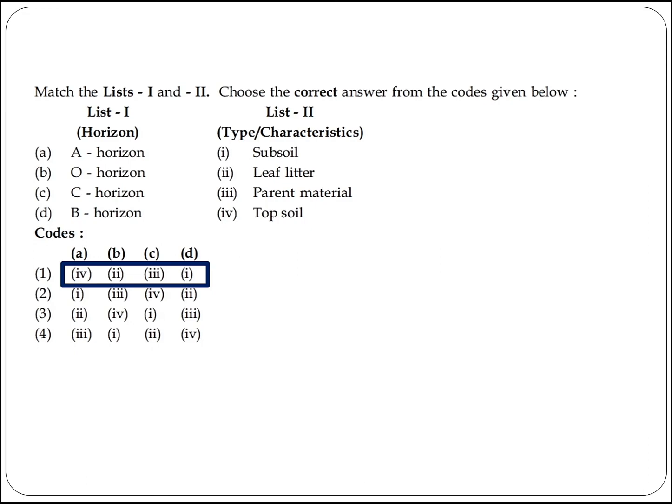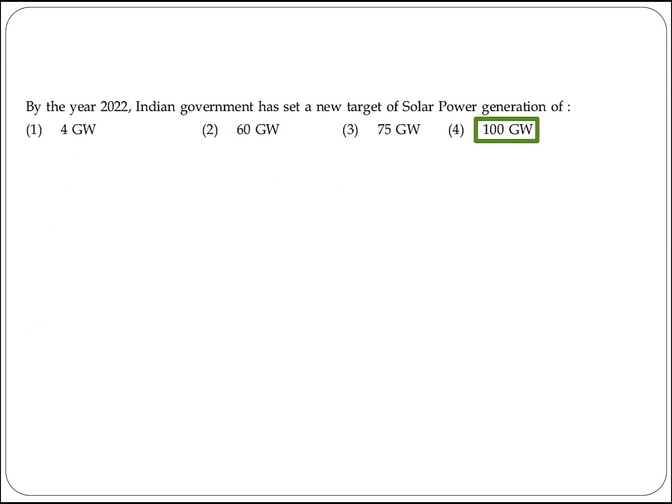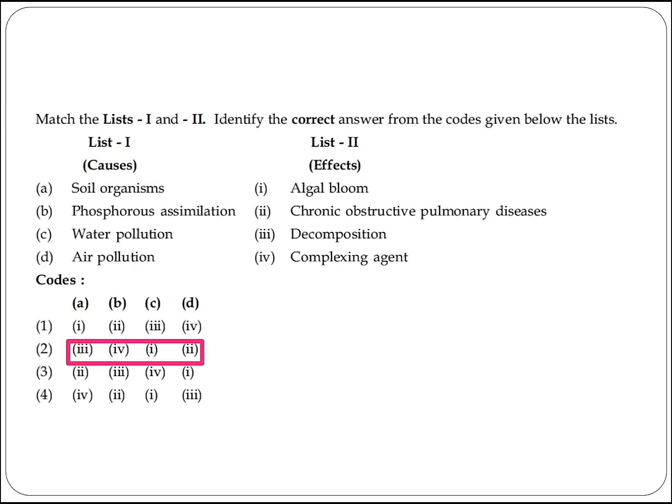The next question asks about the target set by the Indian government for solar power generation by the year 2022. The target was 100 gigawatts. Option 4 is the right answer.